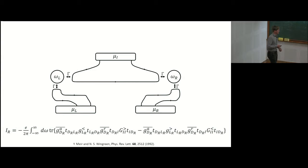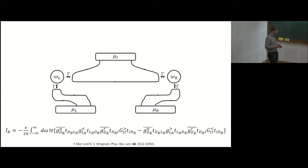I want to give a brief glimpse of the underlying formula for the current through the drain lead — this is the most important formula because it is the observable we are interested in. Initially it looks very complicated; it is derived with the Keldysh non-equilibrium Green's functions technique, but the expression has a very nice intuitive interpretation.